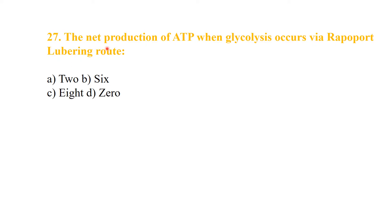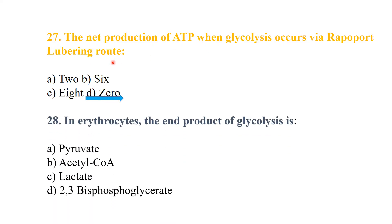Question 27: the net production of ATP in glycolysis via the Rapoport-Luebering pathway is 0. In erythrocytes, the end product of glycolysis is lactate.